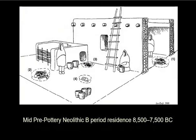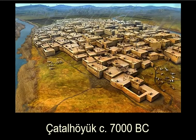Eventually they started making square buildings with lots of plaster. You can see plaster floors on the outside, plaster floors on the inside, plaster on all the walls inside and outside, and on the roof. Plaster is a big thing — lime plaster — as is burying people under the floor and doing funny things with them afterwards.